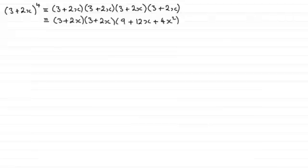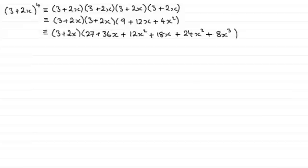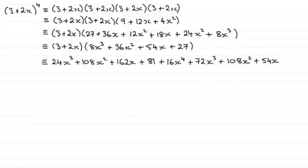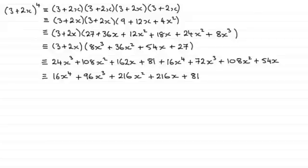You could expand the last two brackets and get this line, then expand (3 + 2x) with that bracket. If you do that you get this; clean this bracket up and you have this line. Then we've just got to multiply these two brackets out — you get all of these terms, group them together, and finally you get the result for the expansion.